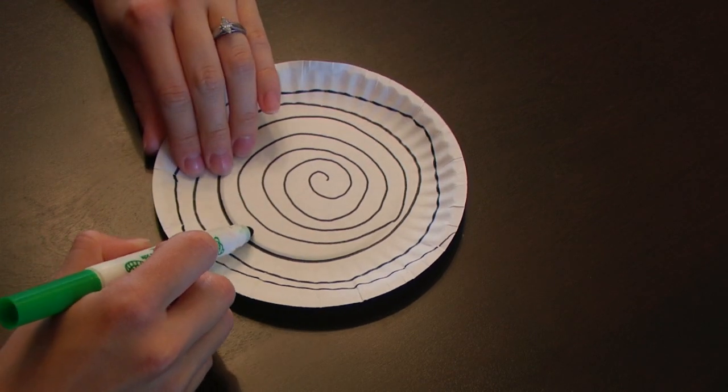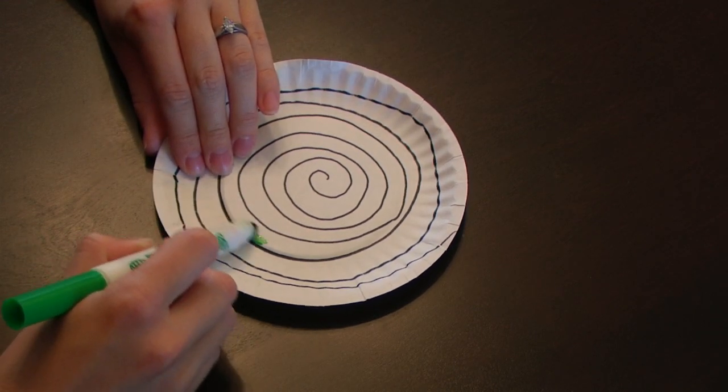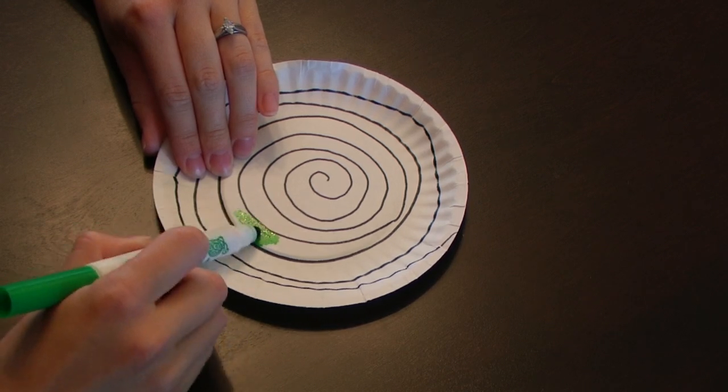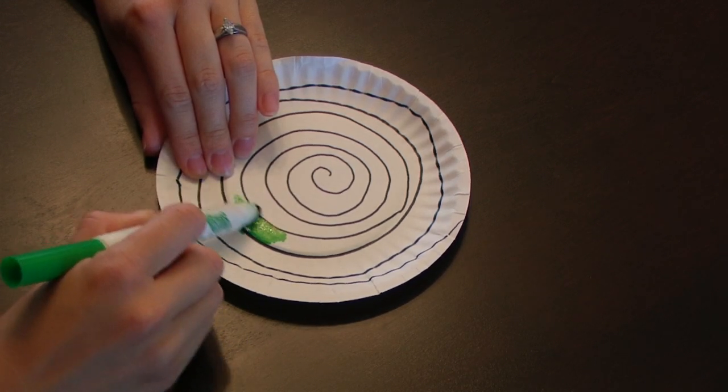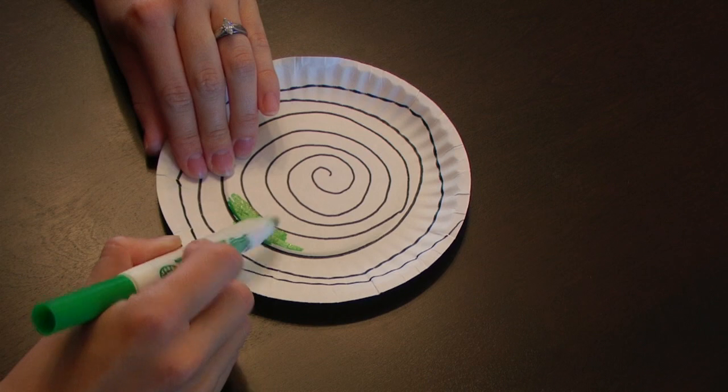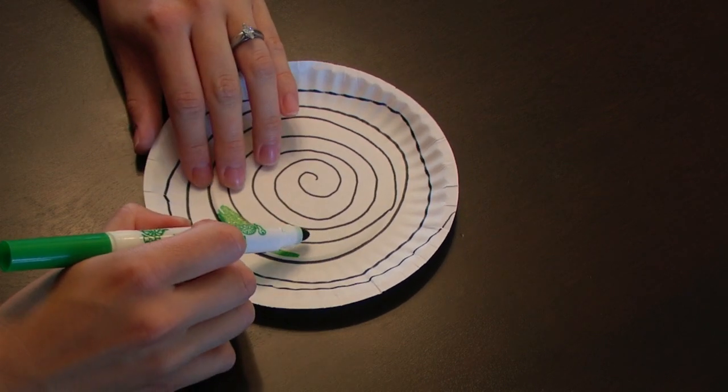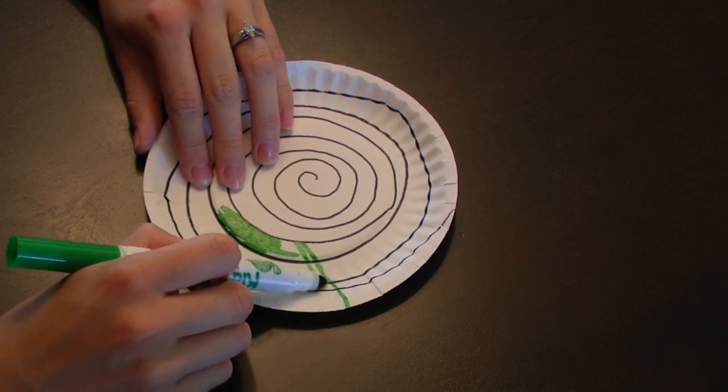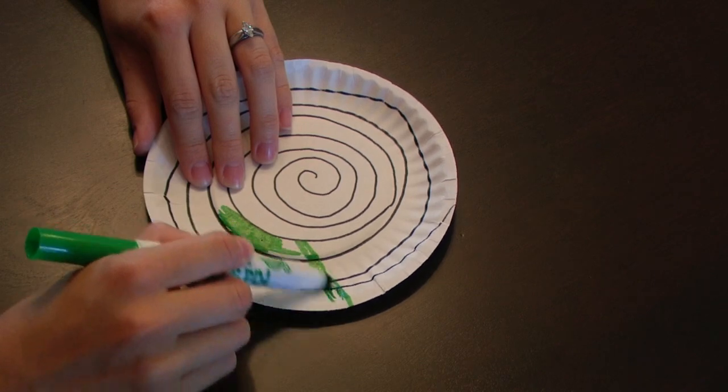You can color in the lines, make designs, shapes, or write some words on it, or you can go outside of the lines. It's all up to you on how you want to decorate your wind spinner.